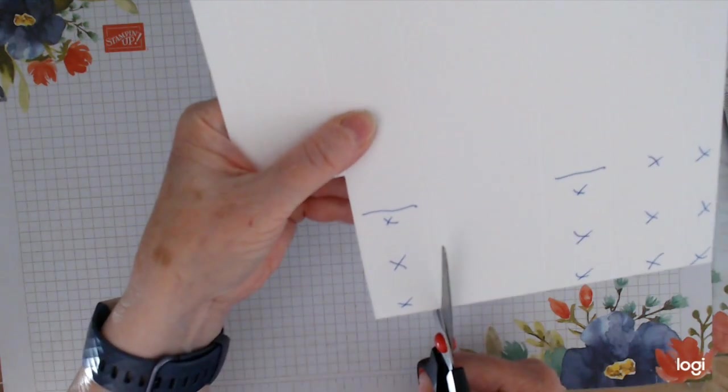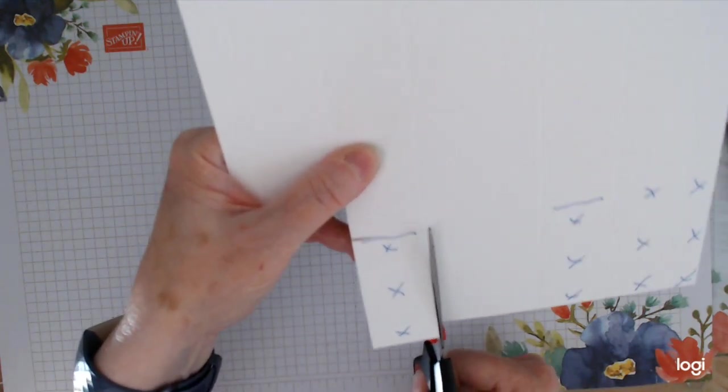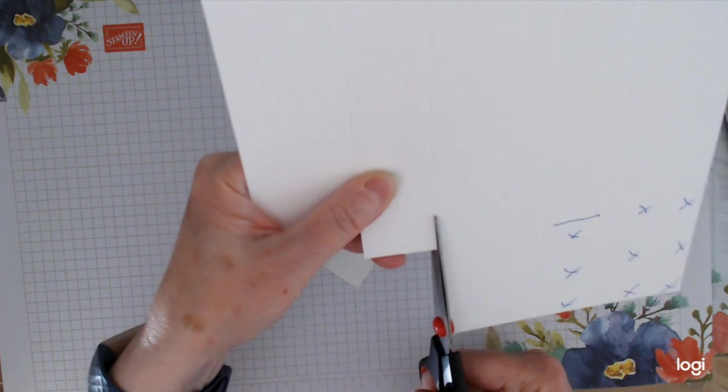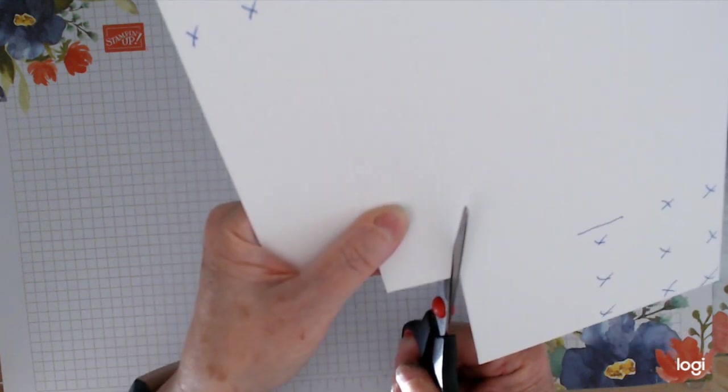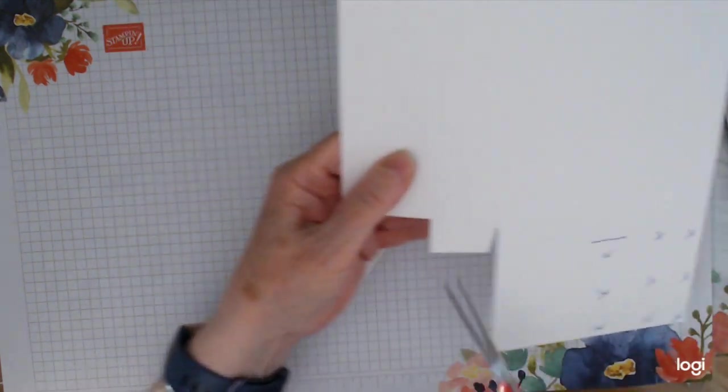Chop all those off, and then cut across where you've drawn your line, back to the bottom and cut all those up, right up past where you've drawn your line to the next crease. And then we're just trimming those in.